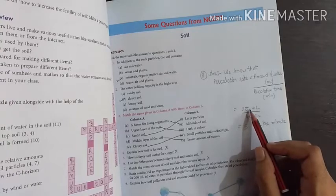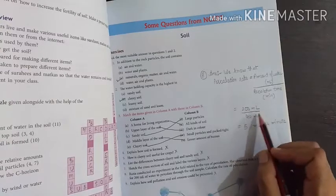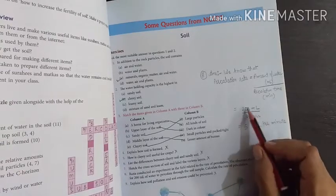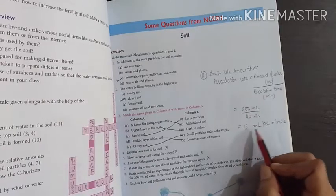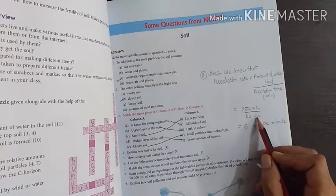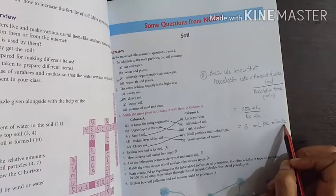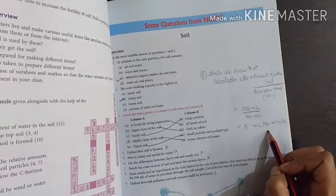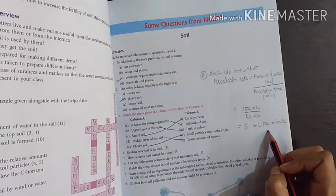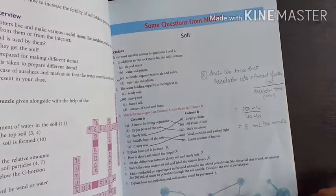So, what is the amount of water? 200 ml. Percolation time? 40 minutes. What is the answer? 5 milliliters per minute. Milliliters divided by percolation time per minute. Clear? So, this is the percolation rate or rate of percolation. This is all about chapter 8.